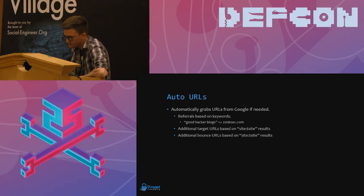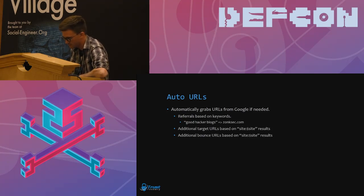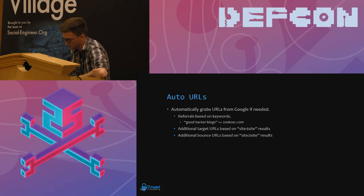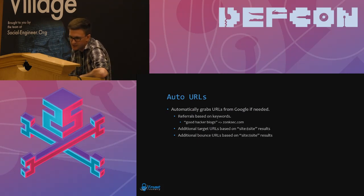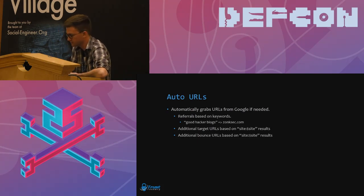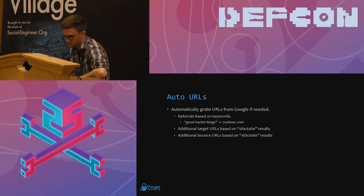The concept of auto URLs: in some scenarios it would be good to control specific referral URLs, target URLs, and bounce URLs, with multiples of each. But sometimes you don't want that granularity — maybe you just want a website to receive lots of traffic that appears to be coming from sites of a certain topic. What if you did a Google search with a certain keyword that gave lots of sites, and made it look like those sites were referring traffic? For example, if we did a Google search for 'good hacker blogs' and pointed that to my blog, that would generate a lot of traffic reinforcing that people are interested in what I'm doing. We can apply that same technique to grabbing target URLs and bounce URLs.